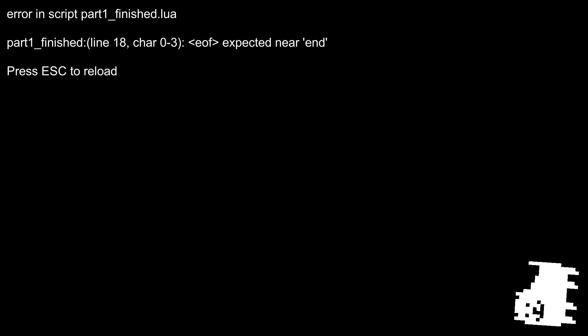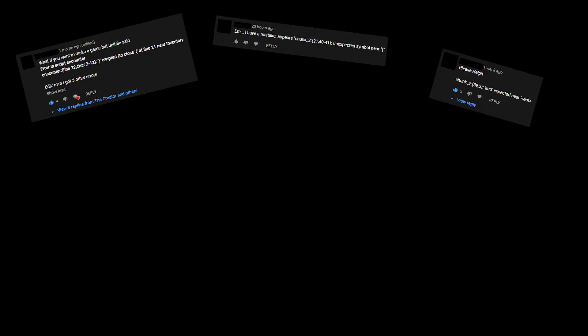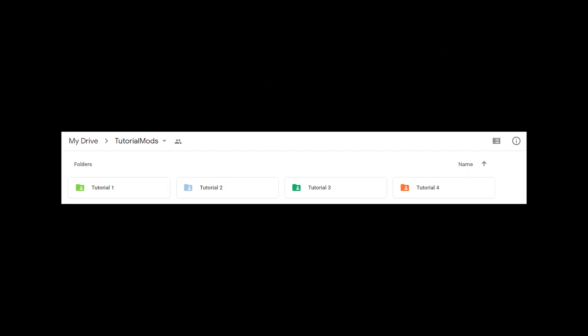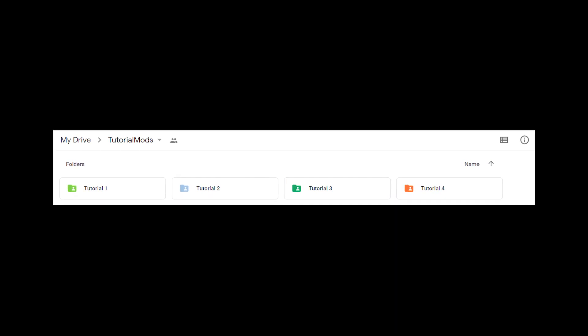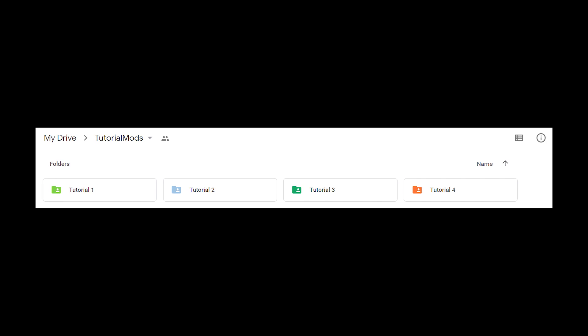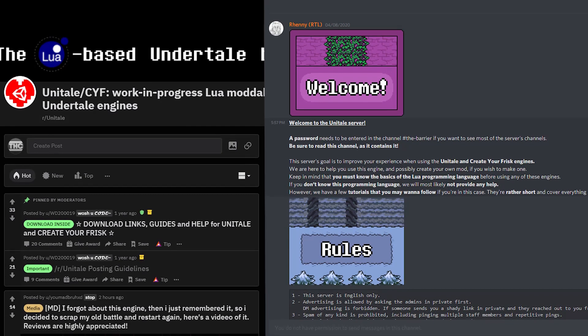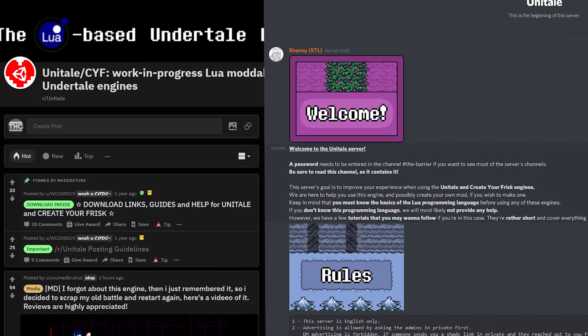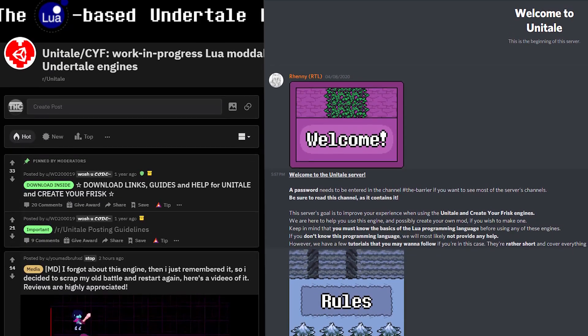If you encounter a nasty error while following this tutorial, please don't copy and paste it into a comment and expect me to immediately figure it out. Try helping yourself by looking at the error message in detail and checking your code. All mods created in this series can be downloaded via a Google Drive link in the description, so you can download them and compare their code to yours. If you really can't figure it out, you can always ask the Unitale subreddit and Discord for help.